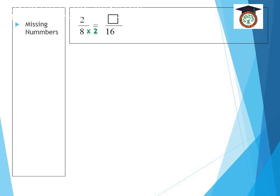Yes, it's 2. Remember that whatever you do in the denominator, you have to do in the numerator. So I have to multiply 2 by 2. So 2 times 2 is equal to 4. So 2 eighths is equal to 4 over 16.